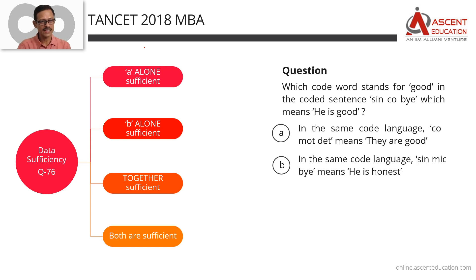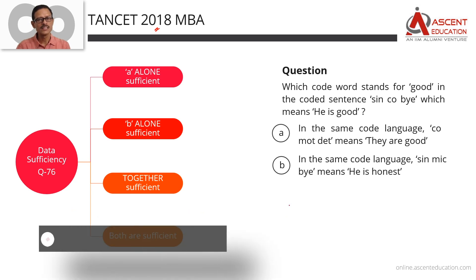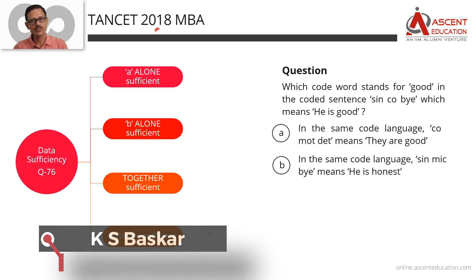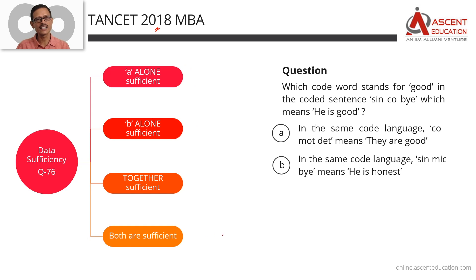This is the Tancet Past Air Question Paper Solution for Tancet 2018 MBA Paper, Question No. 76, a DS question. If you have any of the earlier videos, go to Question No. 75, 74, or any other question you have to go through. I am going to explain the 4 answer options and walk through them quickly.